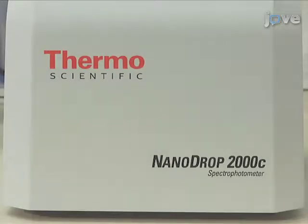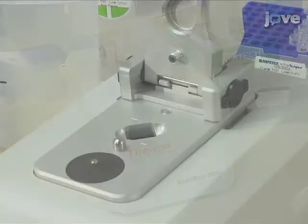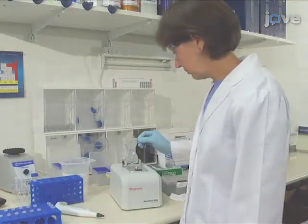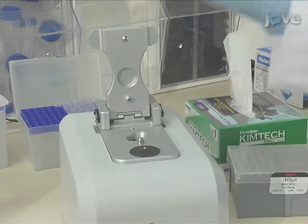The Nanodrop 2000C spectrophotometer uses an innovative sample retention system that relies on the surface tension of liquids to hold and measure microvolume samples between two optical pedestals, without the use of cuvettes or capillaries.